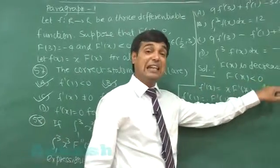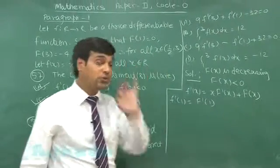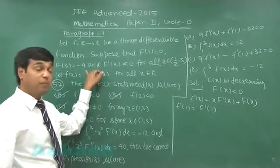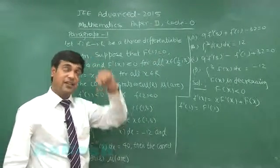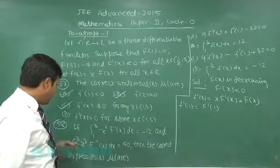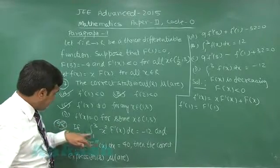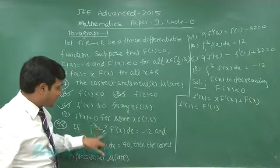This is also correct as it is known to me the function is negative in the interval 1 to 3 because F(1) is 0, F(3) is minus 4, function is decreasing so it is negative.